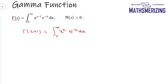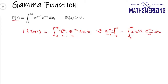Now if I use integration by parts, I'll take x to the power z as the first function and e to the power minus x as the second function. I can write it as x to the power z times e to the power minus x over minus 1, evaluated from 0 to infinity, minus the integral from 0 to infinity of z times x to the power z minus 1 times e to the power minus x over minus 1 dx. Taking the minus sign out gives plus z times the integral from 0 to infinity of x to the power z minus 1 into e to the power minus x dx.